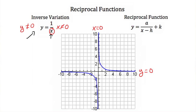Reciprocal functions have a standard form in which they're written. This standard form is y is equal to a divided by x minus h plus k, where a, h, and k are all just constant values, or numbers.